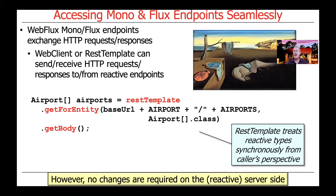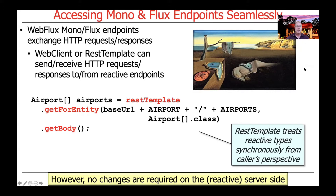If you have endpoints that are using reactive types but you want to use traditional synchronous programming to access them, nothing stops you from doing that. Here's an example where we can access endpoints defined with Monos and Fluxes using the good old REST Template, which is a classic Spring WebMVC-like model that's entirely synchronous. It treats the reactive types synchronously from the caller's perspective. However, the server side can still be fully reactive, and the client can simply ignore that reactivity if it chooses.